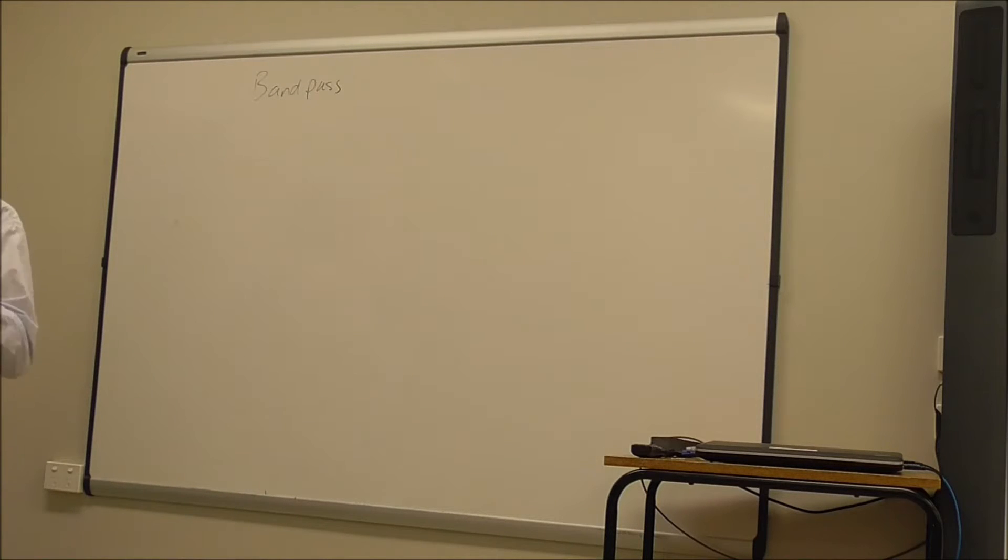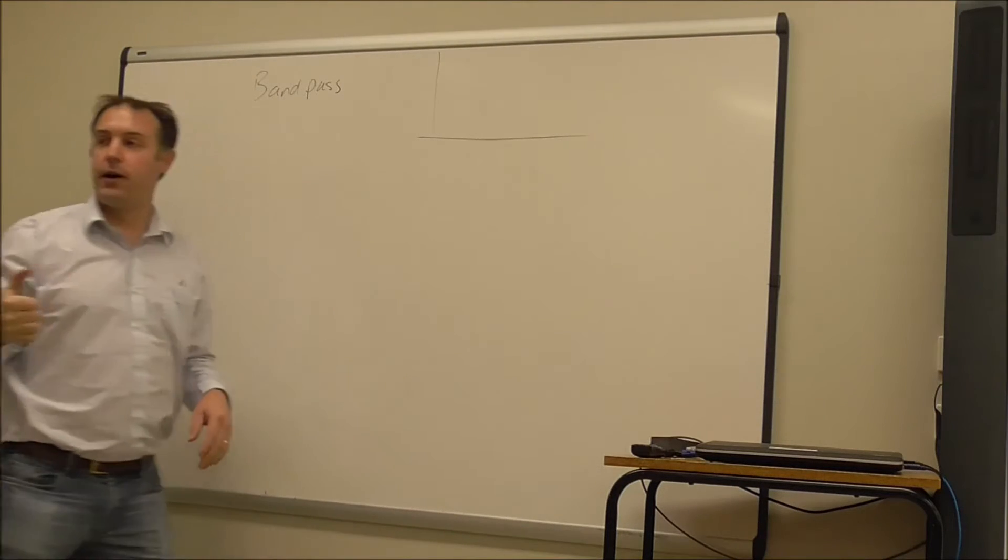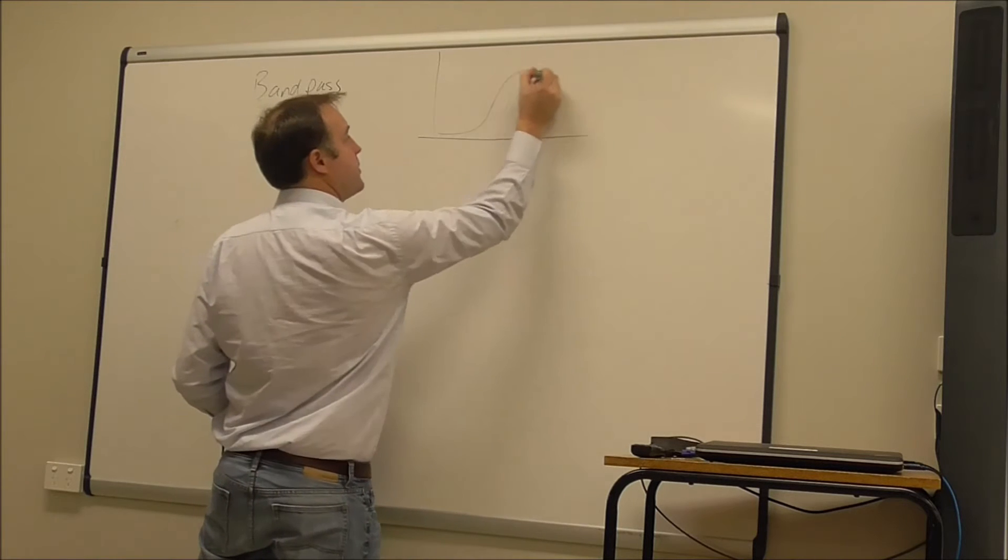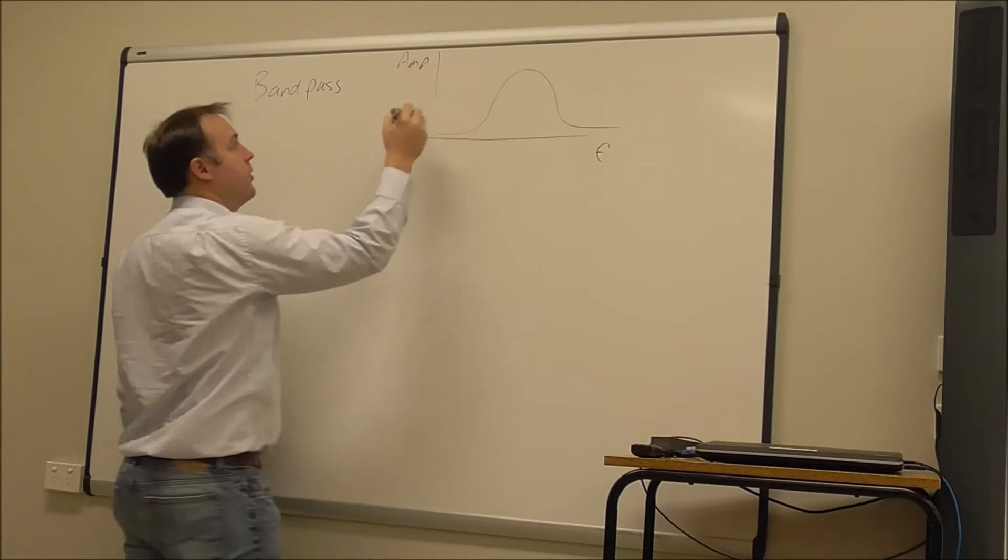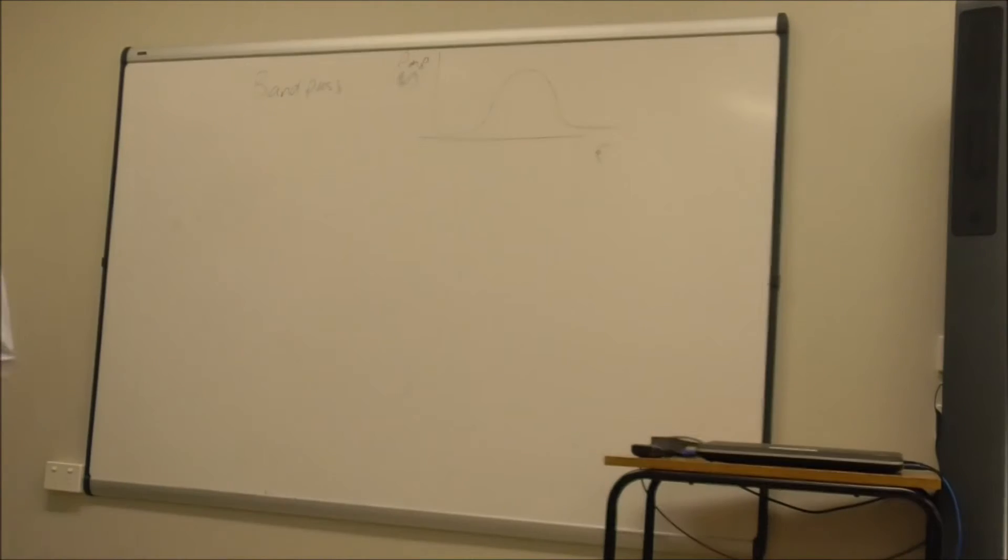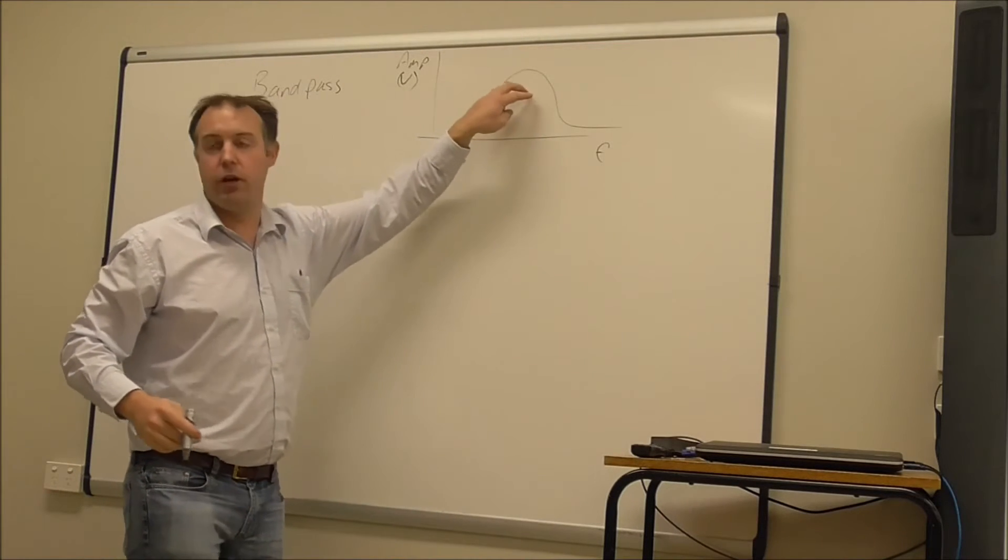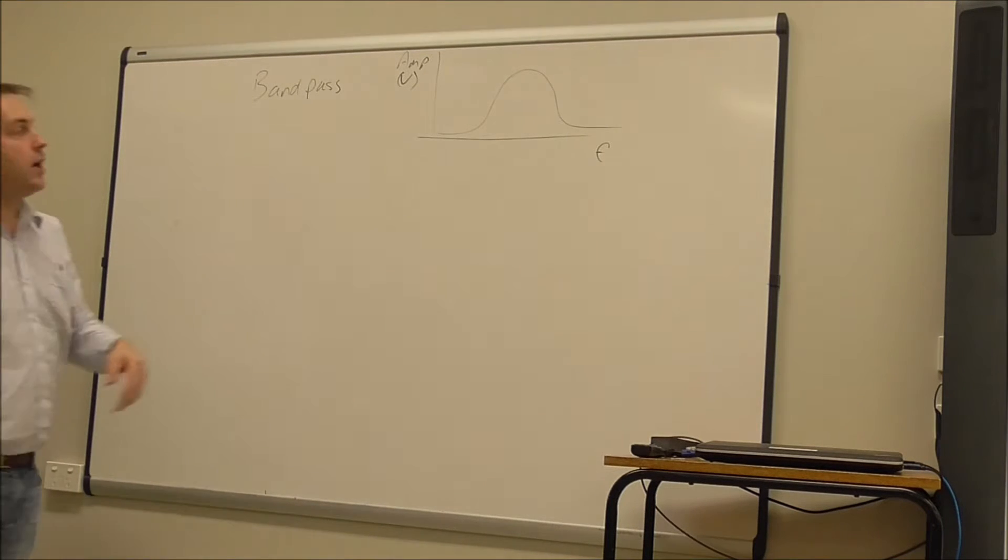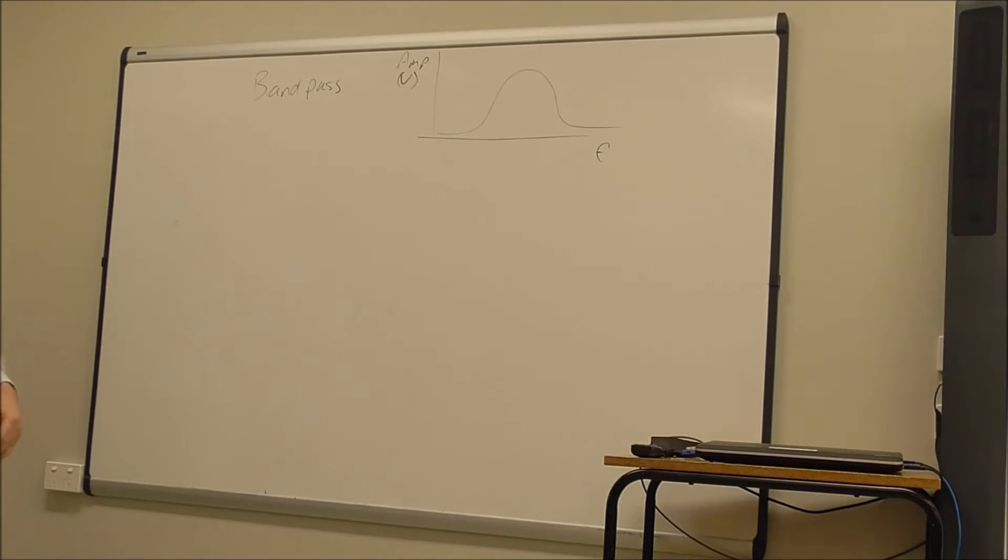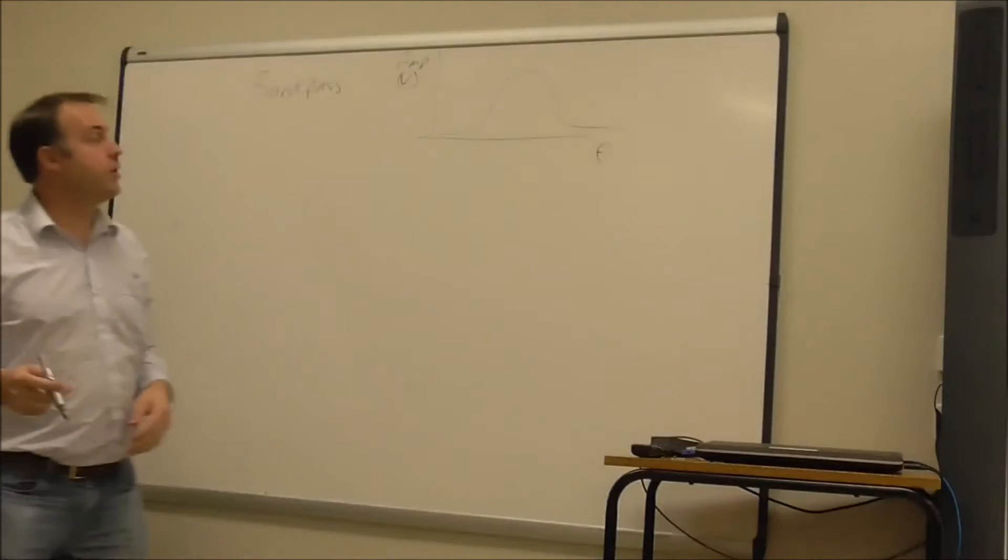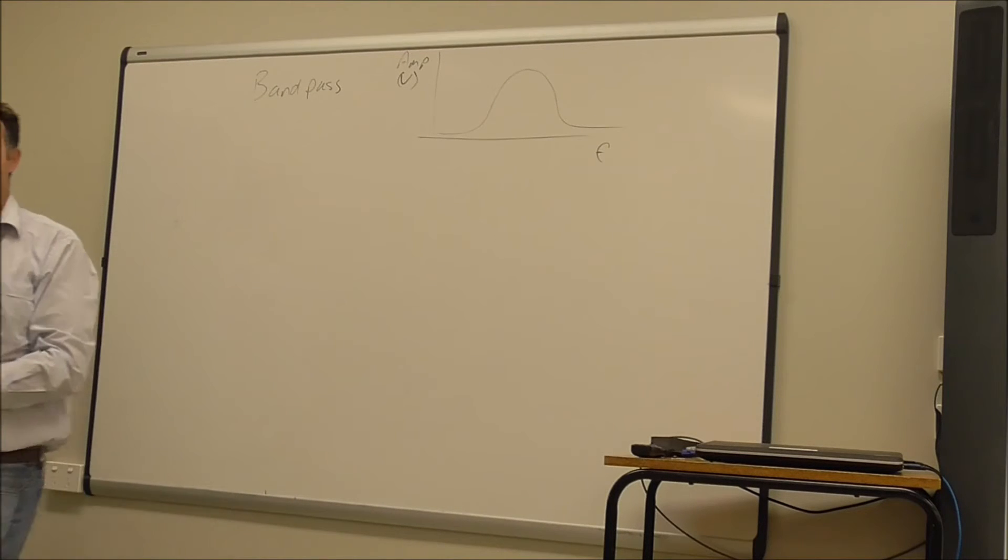A bandpass filter, if we look at it based on the frequency response diagram like we have been for our other filters, it would have a response that looks something like this, where that is the frequency on the horizontal scale and the amplitude, or the voltage, on the vertical scale. And so you see that we have a band in the middle here, in the middle of the range where the output is a high response, so that would probably be close to whatever the input of the filter is, and that the low frequencies are attenuated and also the high frequencies are attenuated.